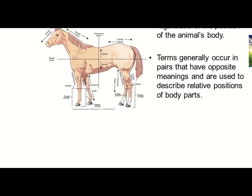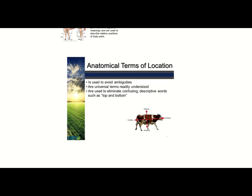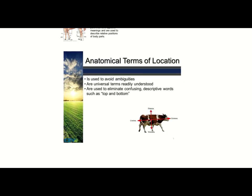Now I'm going through slides from the internet to show how different people display and use these terms in different ways. The more you look at and interpret other people's definitions, the better off you are. This slide calls them anatomical terms of location. Notice how everybody uses different terminology. They're universal terms used to avoid ambiguity — you try to avoid using 'top' or 'bottom' because if an animal is in dorsal recumbency, those relative words become meaningless.